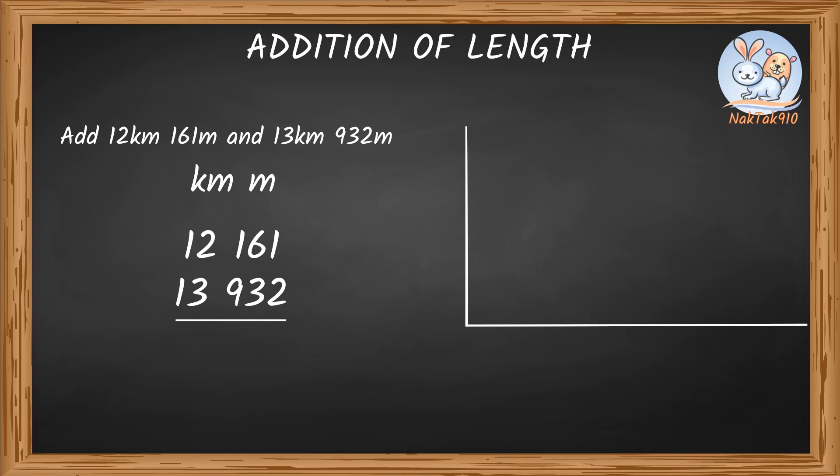Now let's start adding from the left. Let's add the meters column first. 1 plus 2 is 3. Next add 6 and 3, which is 9. Next add 1 and 9, which is 10. Let's take a pause there.